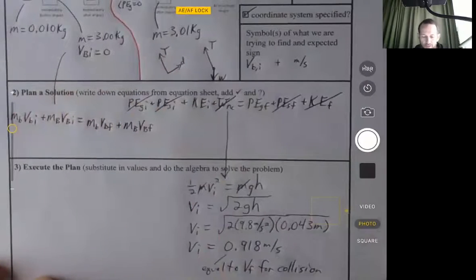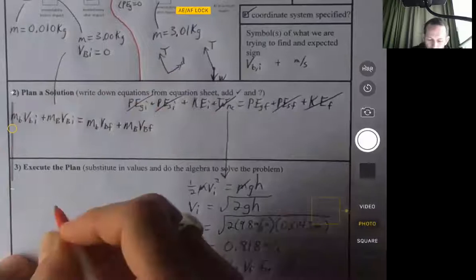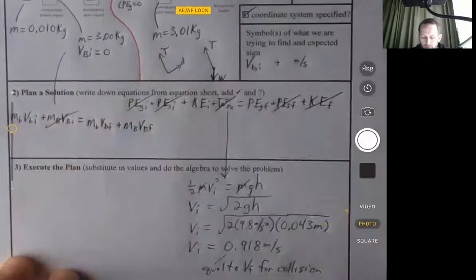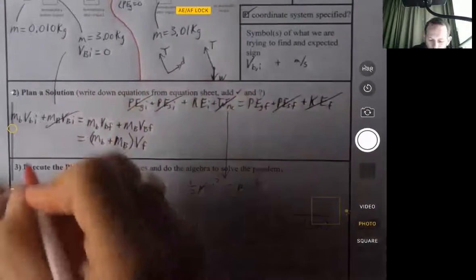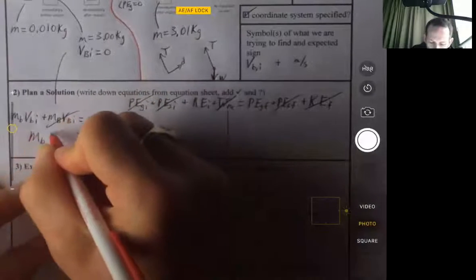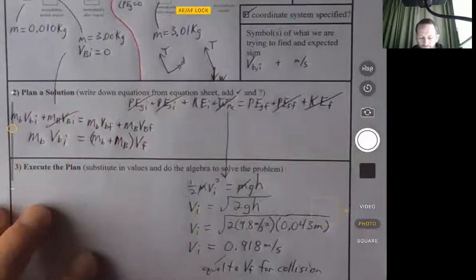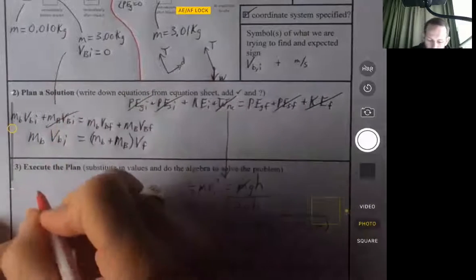So that's our conservation of momentum equation. And I know that block wasn't moving initially. I also know that both things were together afterward. It was a perfectly inelastic collision. So I can regroup the right side to look like that. On the left side, I got rid of that one term.